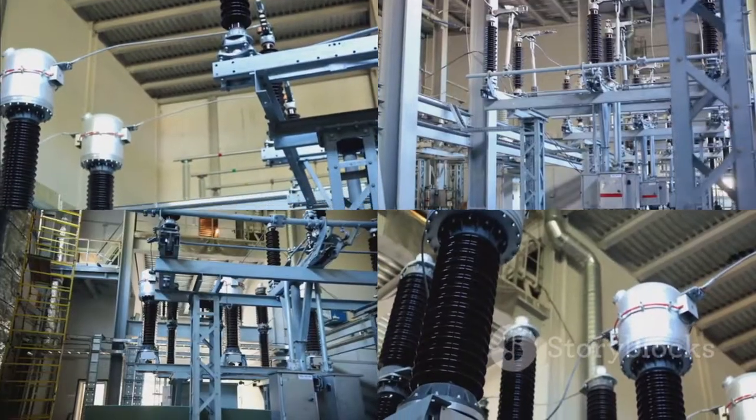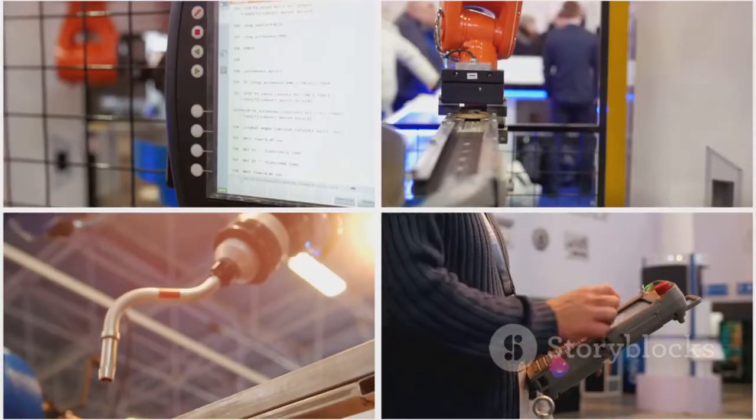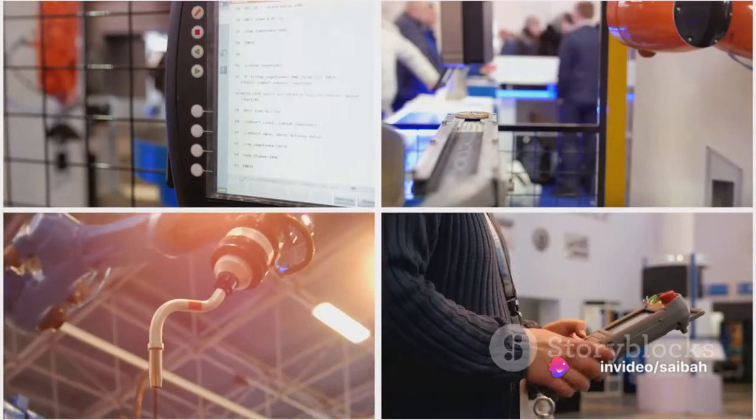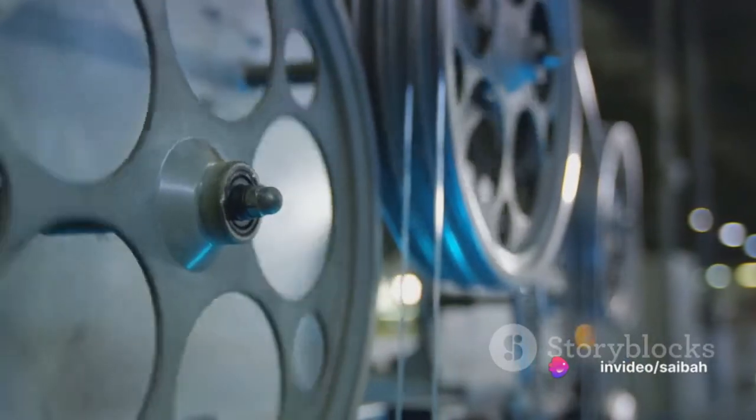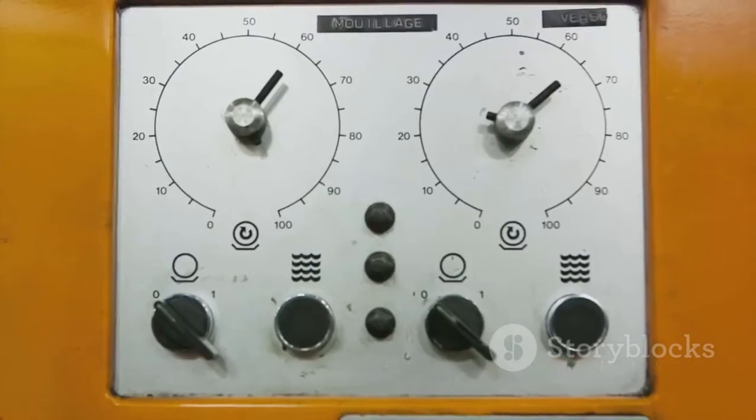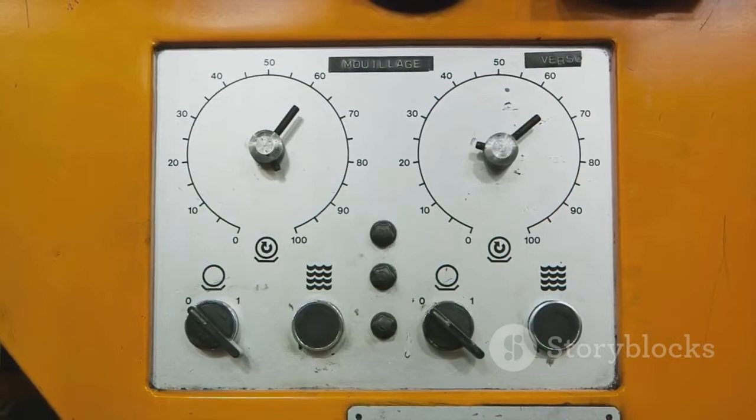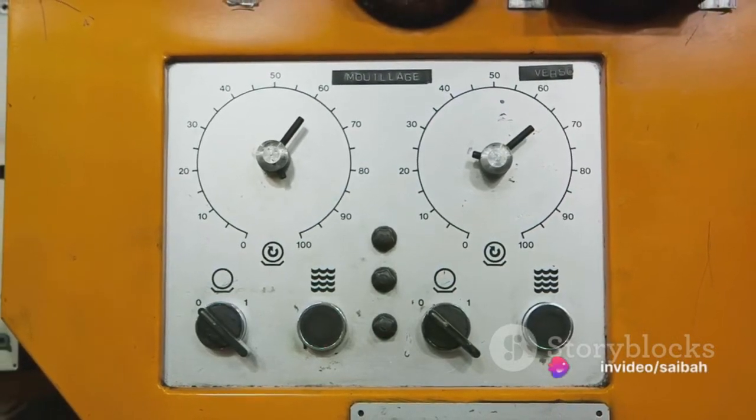It can handle more complex applications that require additional power. In a 4-wire configuration, 2 wires are used for power supply connections, and the other two are used for signal output. This allows the transmitter to operate independently of the load, enabling it to deliver a consistent signal regardless of load changes.